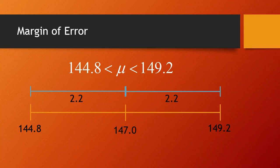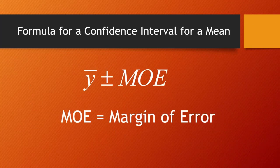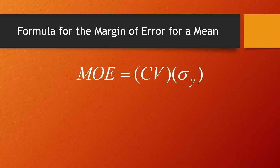That is, if we take the sample mean and add and subtract the margin of error, that gives us our confidence interval. It turns out there is actually a formula for the margin of error. The margin of error, or MOE, is equal to the critical value times the standard deviation of the means.